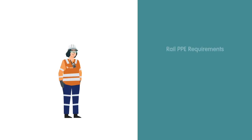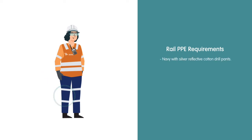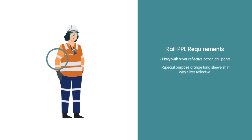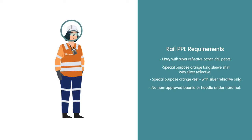Traffic controller rail PPE requirements include: navy with silver reflective cotton drill pants; special purpose orange long sleeve shirt with silver reflective; special purpose orange vest with silver reflective only. No non-approved beanie or hoodie under hard hats is allowed.